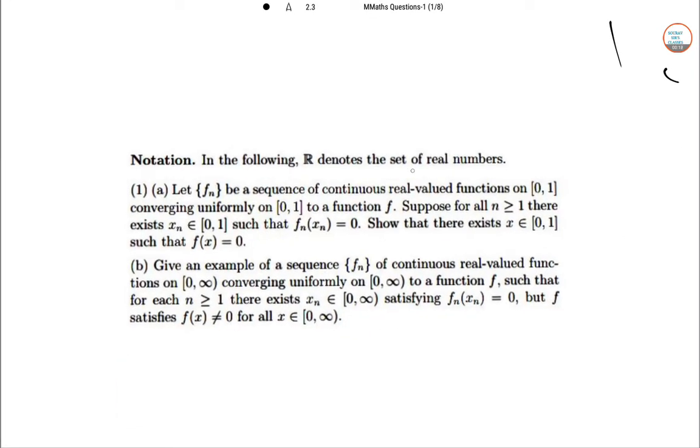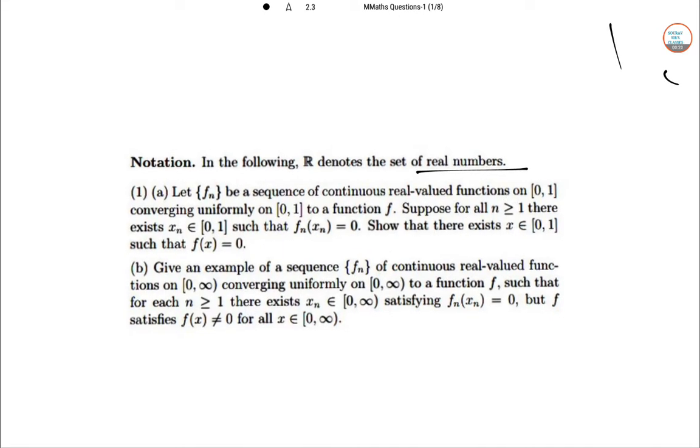Now notation R denotes the set of real numbers. So let Fn be a sequence of continuous real valued functions on [0,1] converging uniformly on [0,1] to a function F. Suppose that for all N greater than equal to 1, there exists Xn in [0,1] such that F of N Xn is 0. Show that there exists X belongs to [0,1] such that Fx equal to 0.